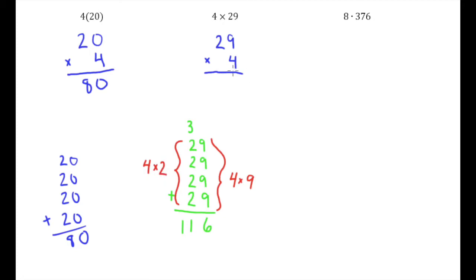If I go up here I can get the exact same answer using the following shortcut: four times nine is thirty-six, so I put my six down here just like I did when adding, and carry my three to the tens place. Then, just like I added up my four twos and added the three, that's the same as four times two is eight plus three is eleven. You can see there's much less writing, but it's doing the exact same thing as the addition — just in shorthand form.